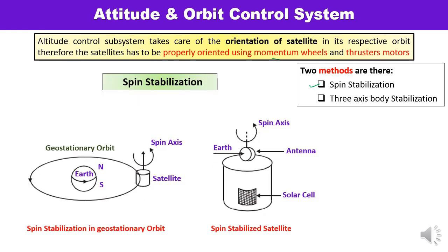In spin stabilization, the satellite consists of cylindrical drums covered by solar cells, with rocket motors also available. The antenna remains pointing towards the Earth, and the opposite motion is known as de-spin. The overall spacecraft is rotated at high speed, and accordingly the stabilization of the satellite orbit is achieved.